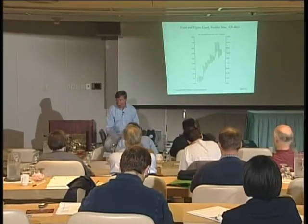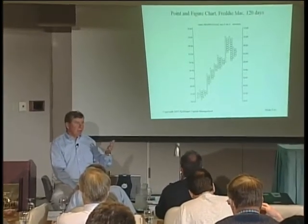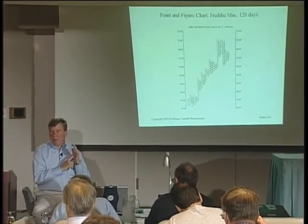Point and figure charts come from the very early part of the century — they were called figure charts. Traders on the floor kept track of their trades by writing down the last figure of the price in descending and rising columns, using actual numbers instead of X's and O's. That's the earliest type of charting activity recorded in this country. I think they're quite effective in the futures markets.